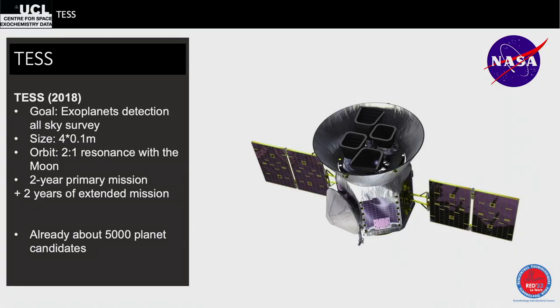In 2018, NASA launched TESS — the Transiting Exoplanet Survey Satellite — with the goal of covering the whole sky rather than one patch. It has four small cameras, so it's less sensitive than Kepler, but observes the entire sky. There was a two-year primary mission, extended by two more years due to success, and we now have around 5,000 planetary candidates.